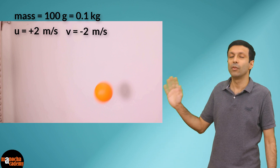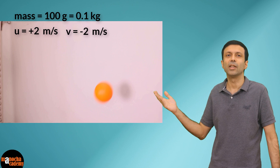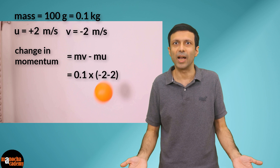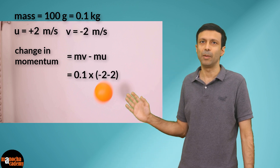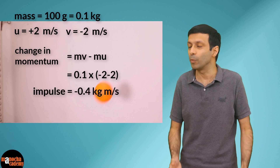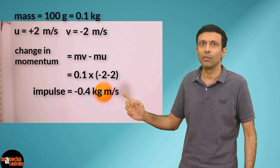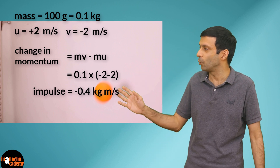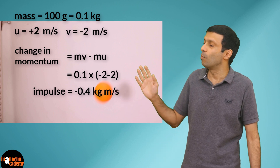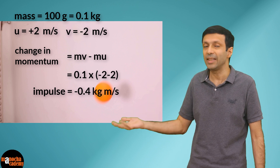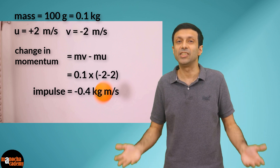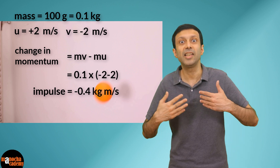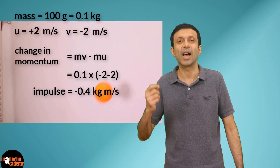Here, I'm taking the initial velocity as positive (+2 m/s) and the final velocity after collision as negative (−2 m/s). Now plugging the correct values into the formula: impulse = mv − mu = 0.1 × (−2) − 0.1 × (2), giving us −0.4 kg·m/s. This is the impulse that the wall applies on the ball — the product of the force and the time duration.